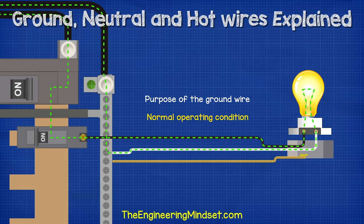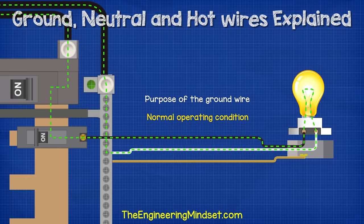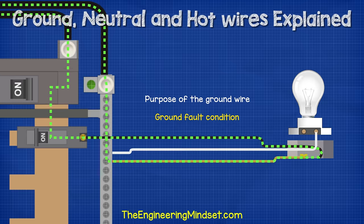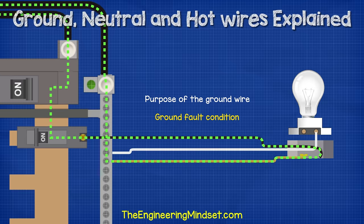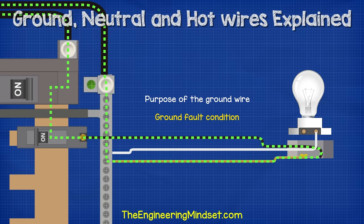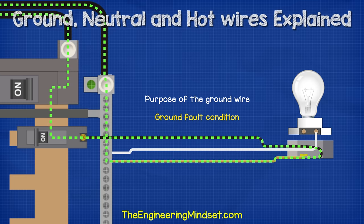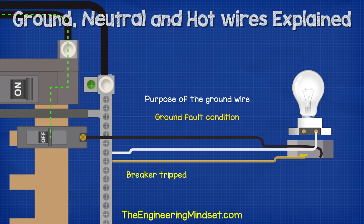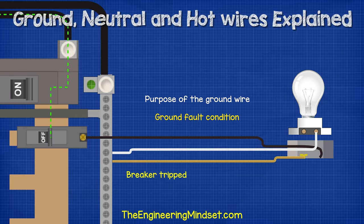Coming back to the house: the electricity flows through the hot wire and into the light and then back through the neutral. But if the hot touches the metal casing, it will instead flow through the ground wire back to the panel, through the bus bar, and then back to the transformer via the neutral wire. The ground wire has a very low resistance, which causes a huge and instantaneous increase in current that will trip the breaker.